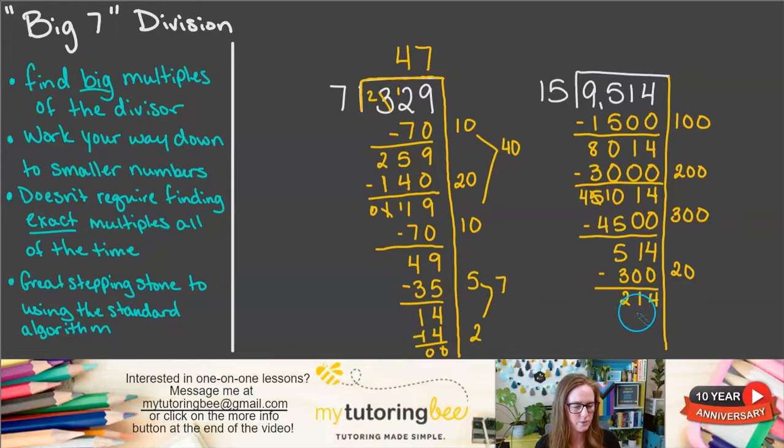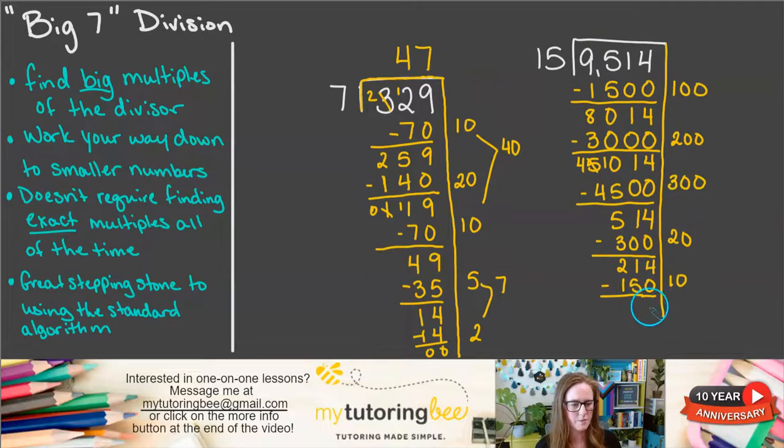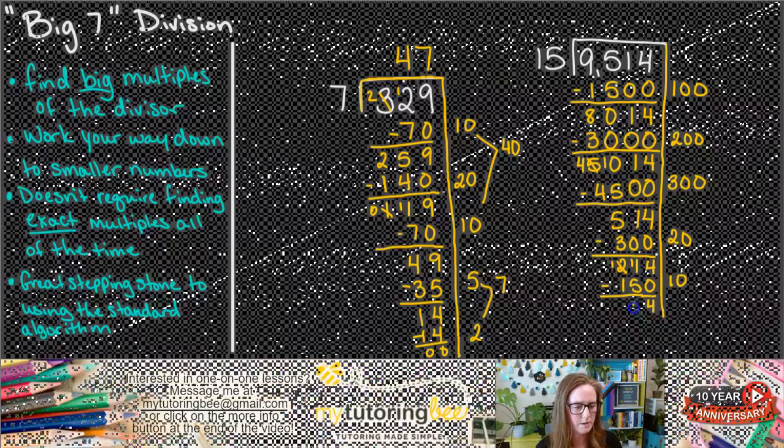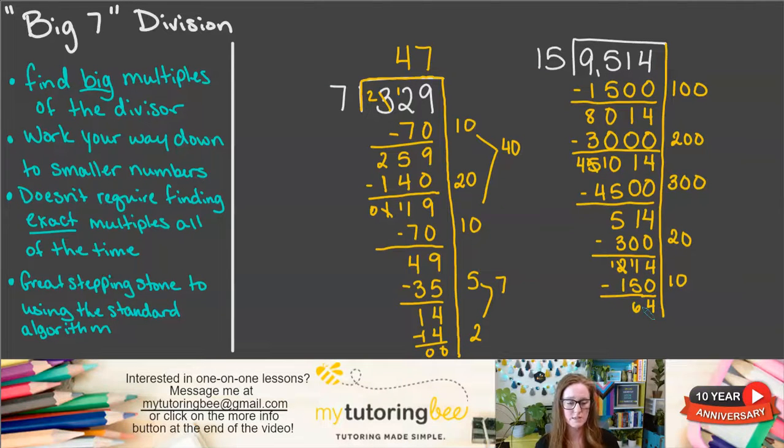So let's see. We've got 214 left over here. Let's go ahead and take away 10 groups of 15. So 15 times 10 is 150. I'm going to scoot this up just a little bit, give myself a little bit more room. So let's subtract. We're going to regroup. So that gets us down to 64.